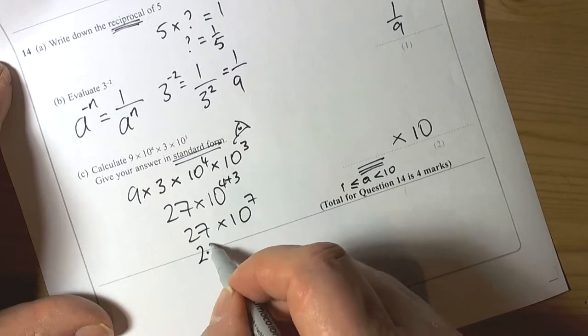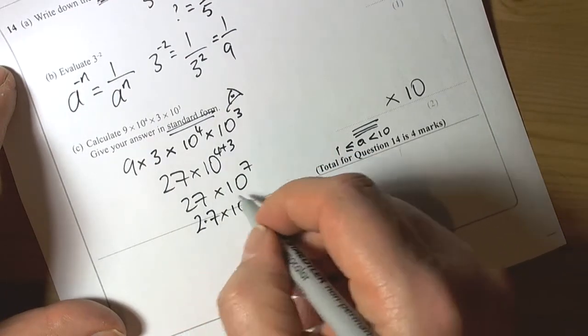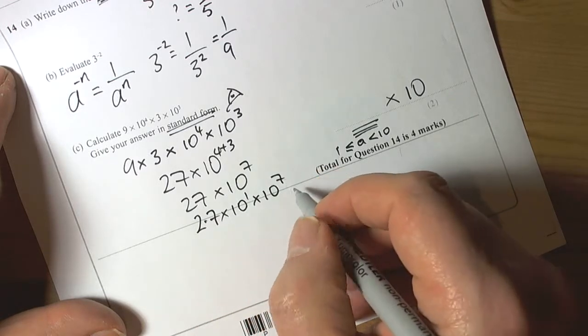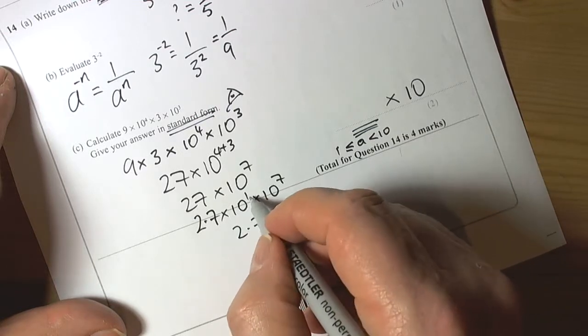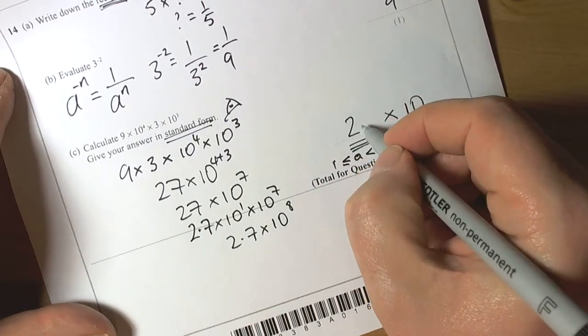That means we've got to change this down to 2.7. If we change that down to 2.7, twenty-seven was the same as doing 2.7 times ten to the power of one, still times it by ten to the power of seven. The rules of powers with the same basis tell us I'm going to add the one and seven, which will make ten to the power of eight.